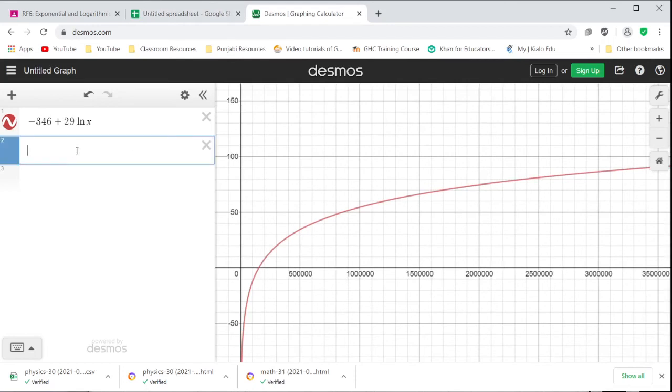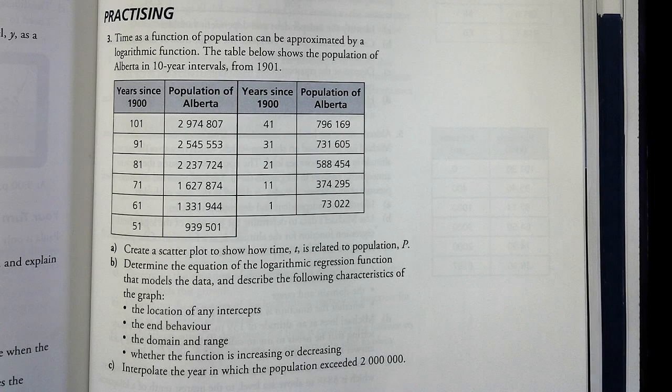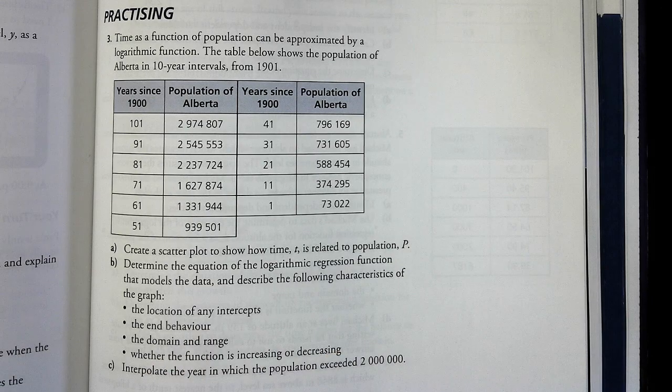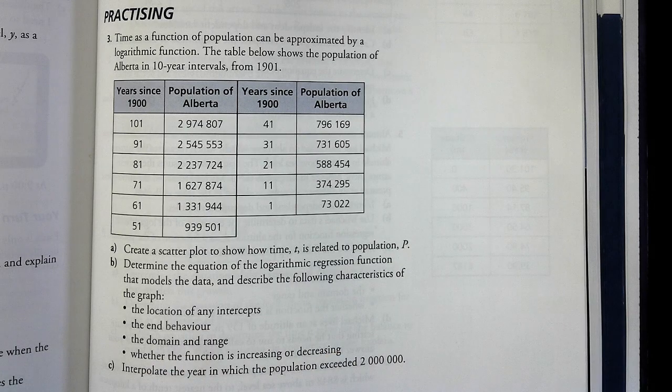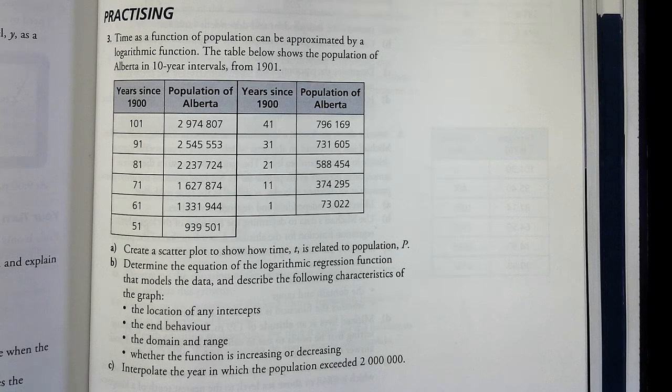So then our x equals 2 million hits at about 75 years. So 1975 was right around the time that we hit that mark we were looking for. And then that's the interpolation. Now the rest of the end behavior we've got once we have the logarithm this way. So that is how we solve questions 1, 2, and 3.